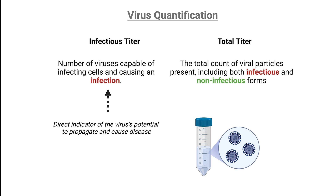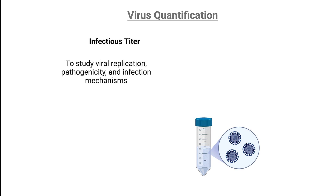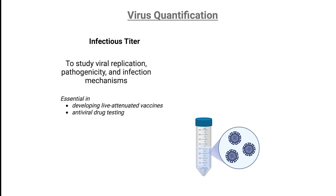Let's start by discussing the infectious titer, essential in research and vaccine development. By measuring how many viruses in a sample can infect cells, scientists can study viral replication, pathogenicity, and infection mechanisms. This is essential for developing live attenuated vaccines, ensuring that sufficient infectious particles trigger a strong immune response without causing illness. In antiviral testing, infectious titer helps assess a compound's effectiveness by comparing virus levels before and after treatment.